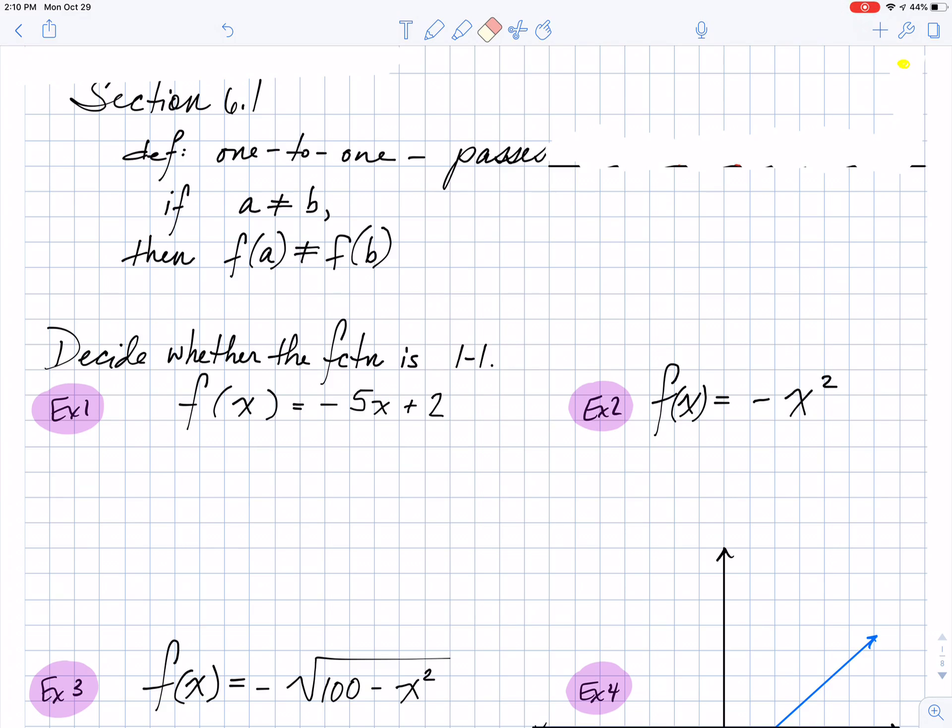So what I'd like for you to take a look here at is first of all just simply the definition. The definition of one-to-one is simply that it's going to pass the horizontal line test. We are going to look at this further in class, but for right now just go ahead and fill in that blank and then we'll talk about it in class.